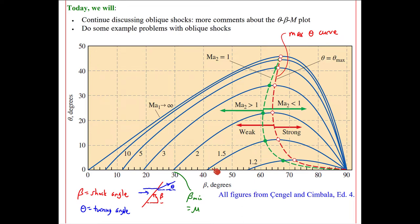For a given Mach number, the bigger the beta, the stronger the shock. The strongest possible shock is the normal shock, where beta equals 90 degrees.